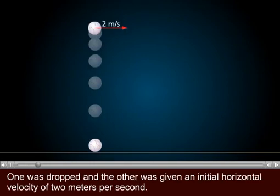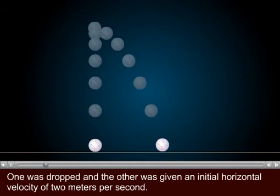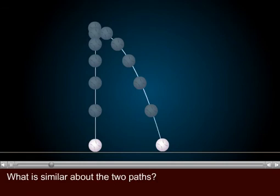Consider the trajectories of two softballs. One was dropped and the other was given an initial horizontal velocity of two meters per second. What is similar about the two paths?